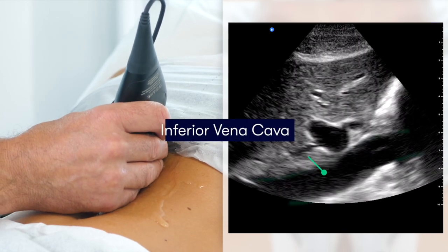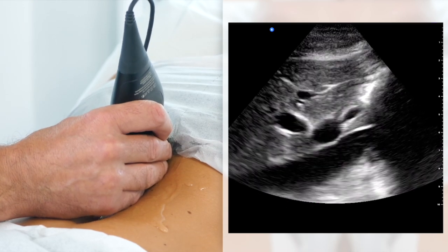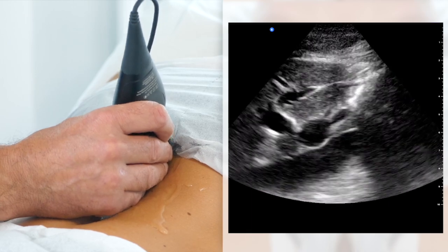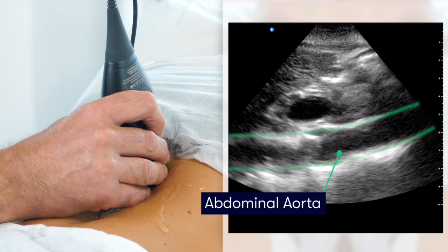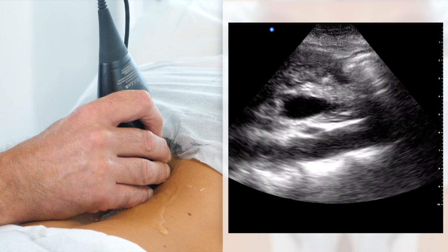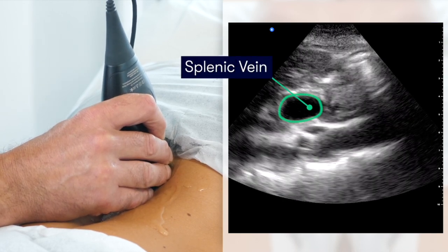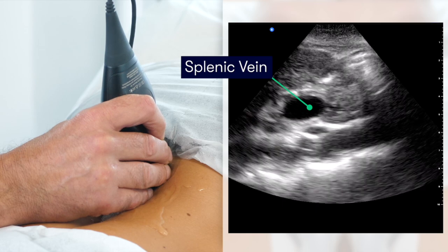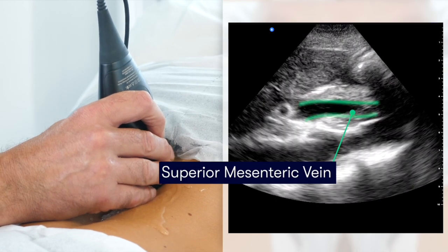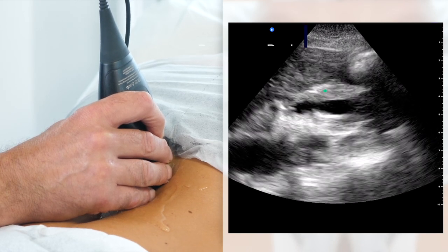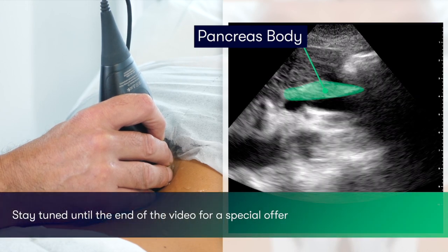The deeper structure visible there is the inferior vena cava, and we can see the hepatic veins draining into it. Moving over to the left, we can see the pulsating abdominal aorta. Superficial to the abdominal aorta, we're able to appreciate the splenic vein in cross-section. Moving slightly to the left, we can visualise the superior mesenteric vein as it drains into the splenic vein. Here we can also appreciate the sagittal view of the body of the pancreas on the surface of the splenic vein, located between the liver and the superior mesenteric vein.